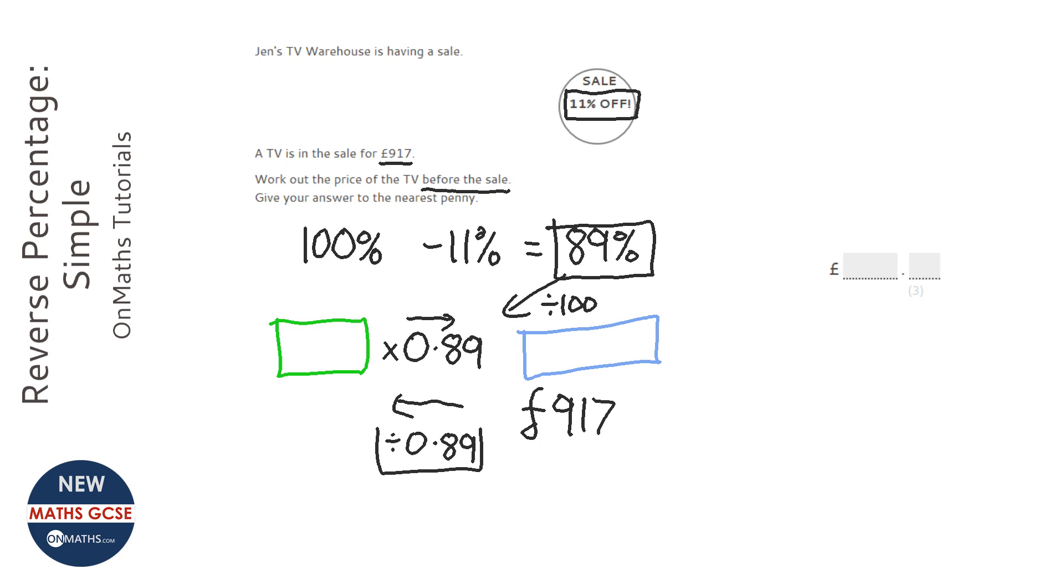Now I show it this way around because I like to have it in the middle, but we've got to do 917 divided by 0.89. Don't do 0.89 divided by 917 otherwise it won't make sense. So on the calculator, 917 divided by 0.89 and press equals. You might get a fraction, just press S today.